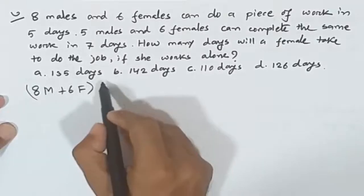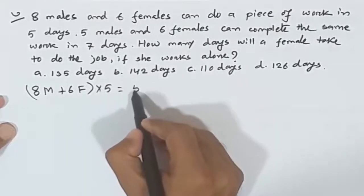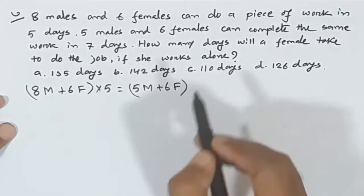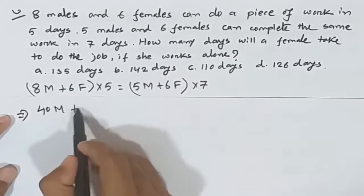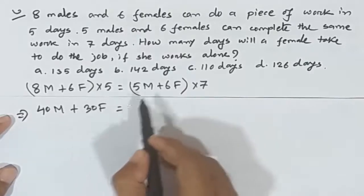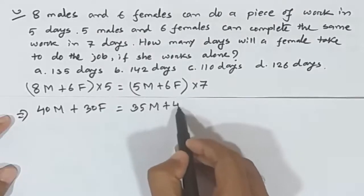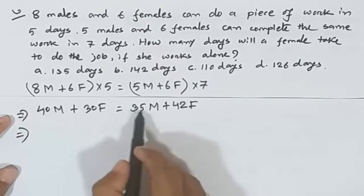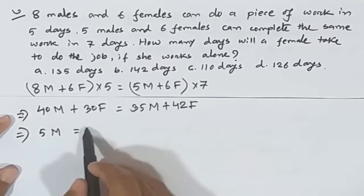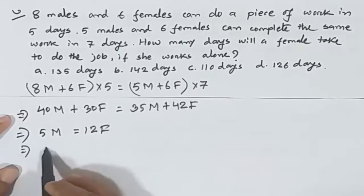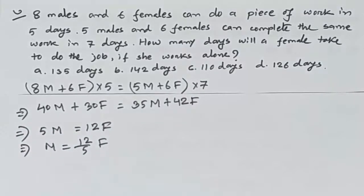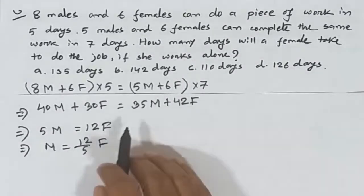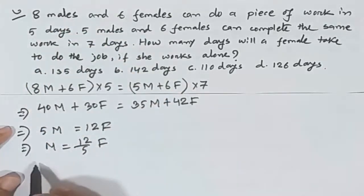Second question: 8 men and 6 women can do a body of work in 5 days. Among these, 5 men and 6 women can do the body of work in 7 days. The second key: 45 men, 5 women, 5 men, 6 women, 7 days — so 1 man equals 2 divided by 5 female.